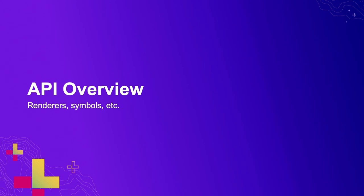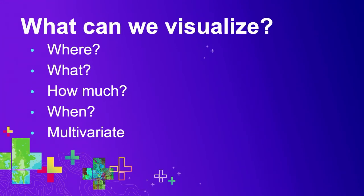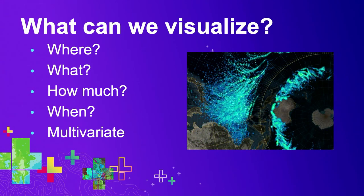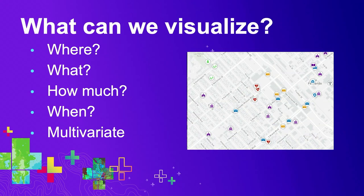Before we dive in, let's take a few minutes for a quick overview of our API, which is primarily comprised of our renderers and symbols APIs. What can you visualize with the API? Pretty much anything. You can visualize where things are - we're a mapping company, so you want to see the location, such as these hurricane locations. Also what - your string data sources like categories: where are the hospitals, schools, places of worship, the parks. Unique values, you can think of it that way.